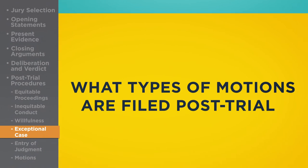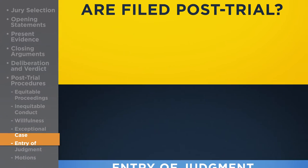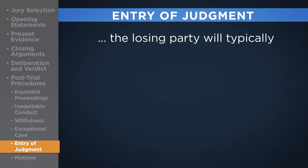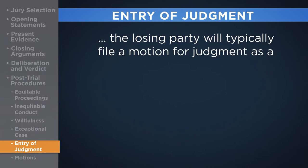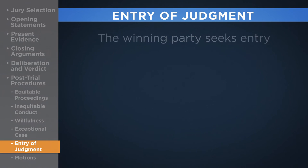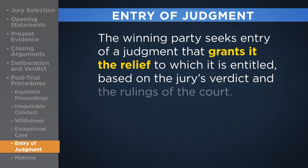What types of motions are filed post-trial? In terms of post-trial motions, the winning party will ask for entry of judgment, while the losing party will typically file a motion for judgment as a matter of law and also a motion for a new trial. The winning party seeks entry of a judgment that grants it the relief to which it is entitled based on the jury's verdict and the rulings of the court.